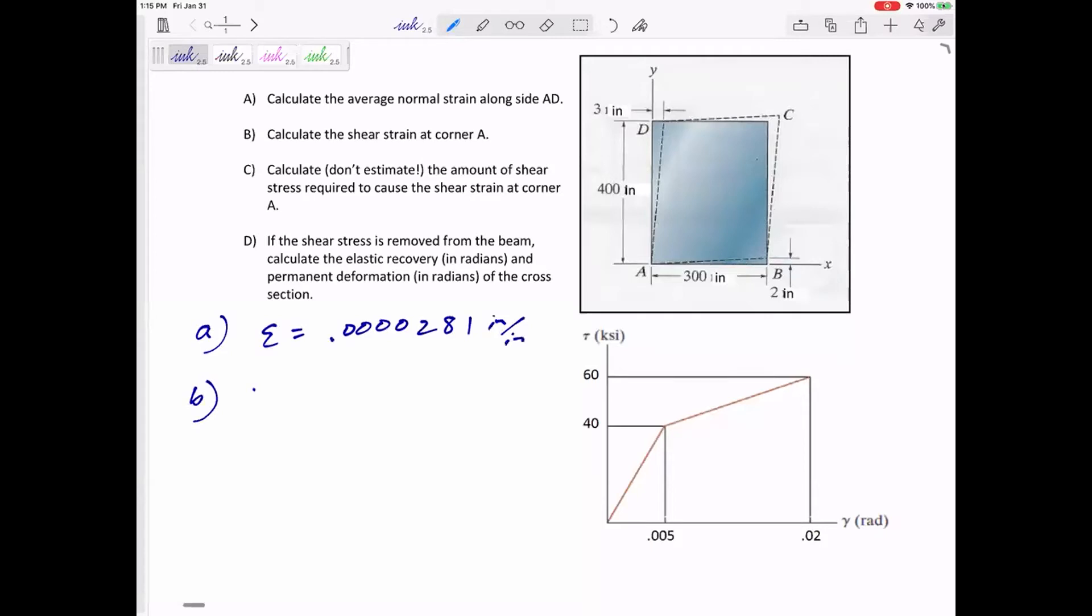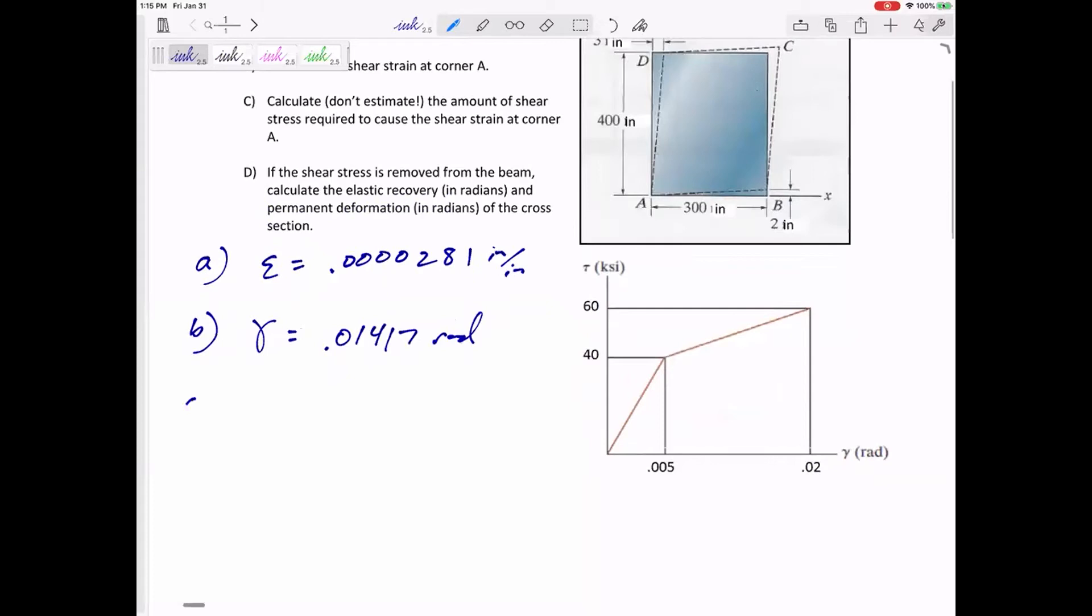For part B, I got a strain, a shear strain, 0.01417 radians. We might have done that. So now let's pick up to where we are.